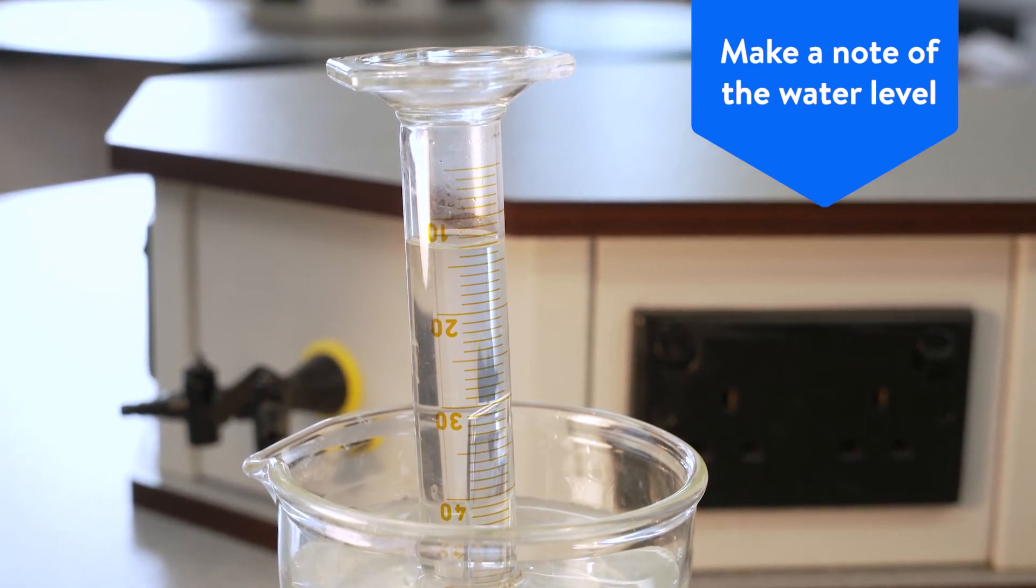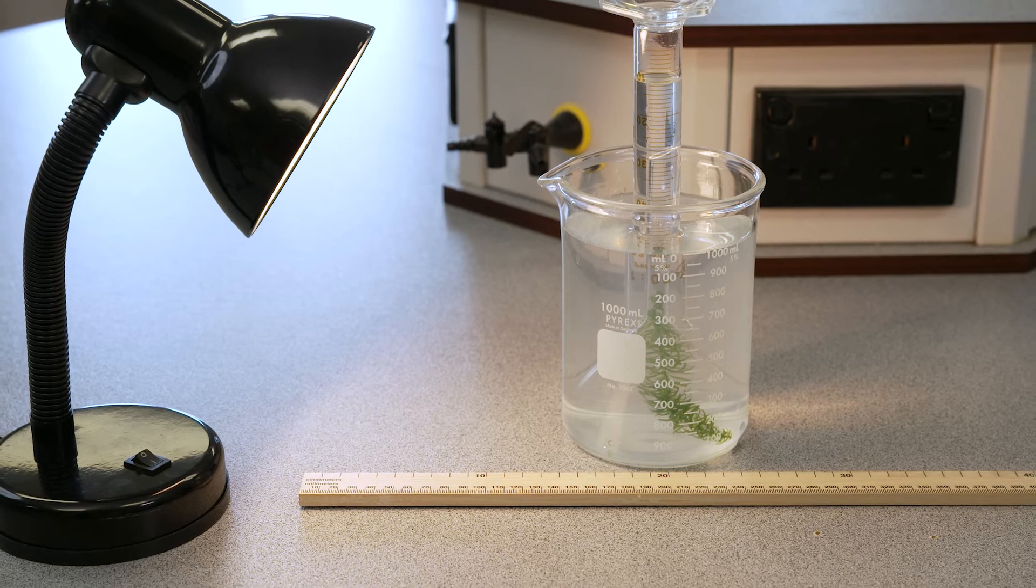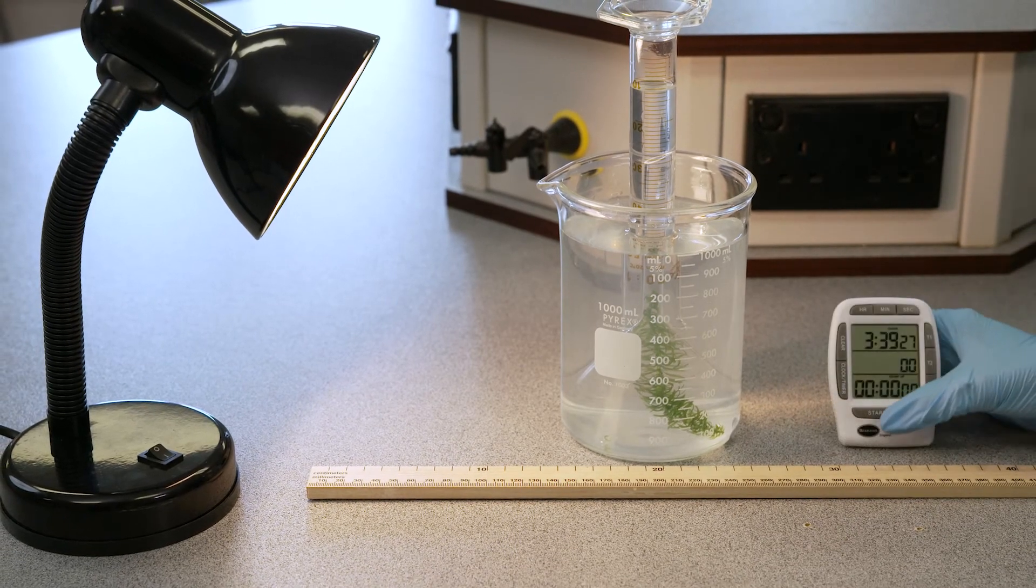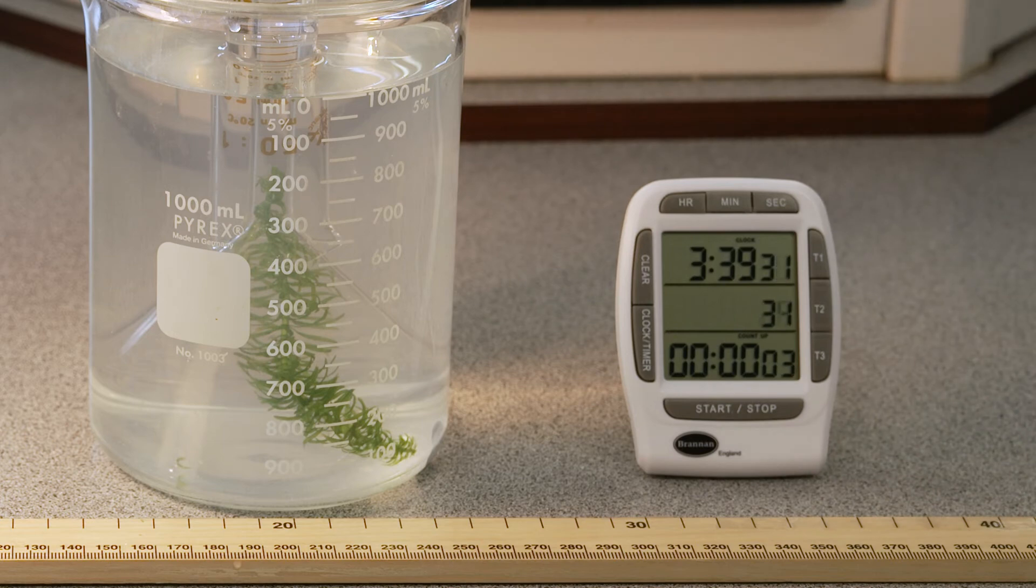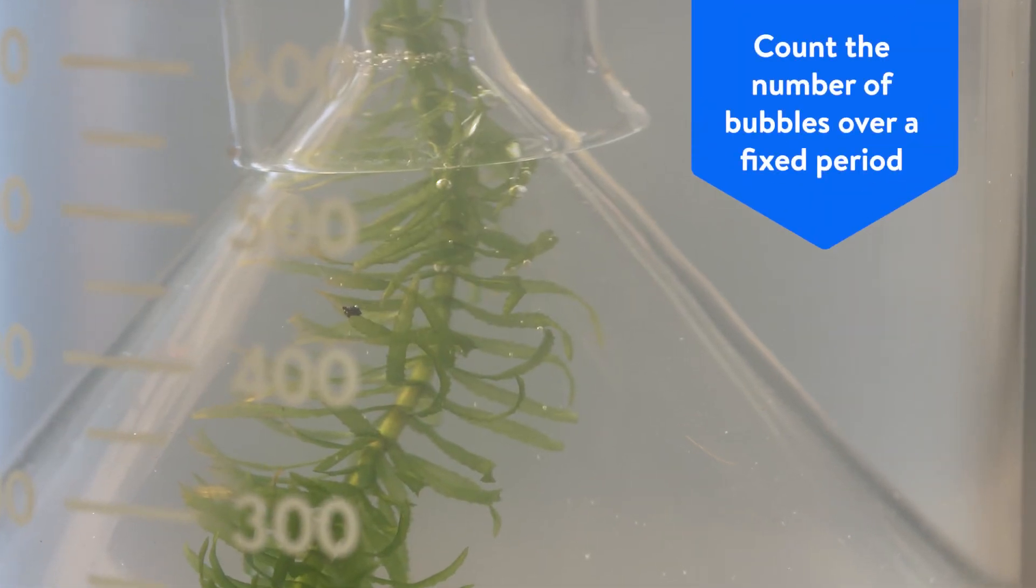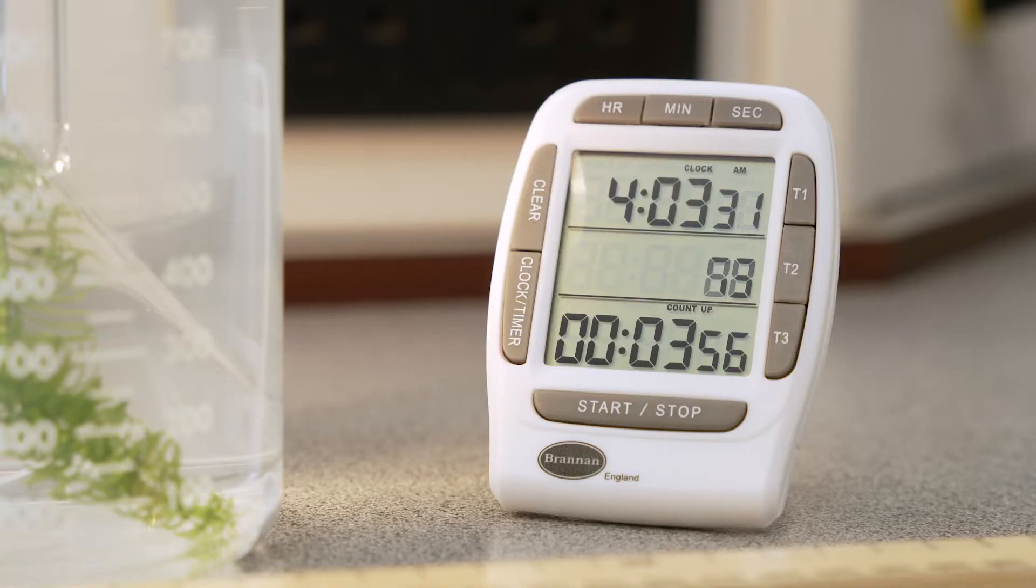Once you have your apparatus ready, give the apparatus time to acclimatize to the lighting. When ready, start your stopwatch and count the number of bubbles produced in a fixed period of time by the pond weed. We recommend a time period of four to five minutes.